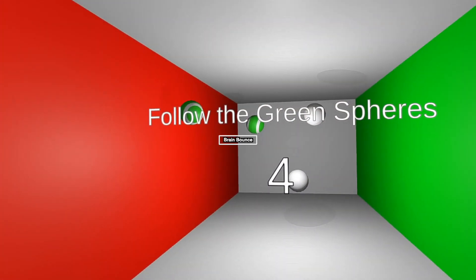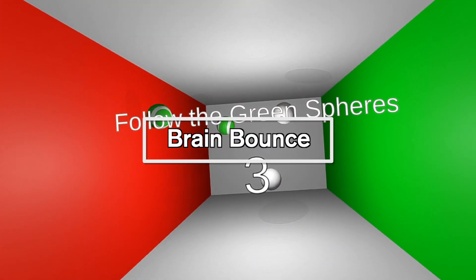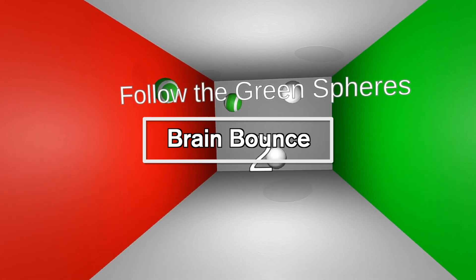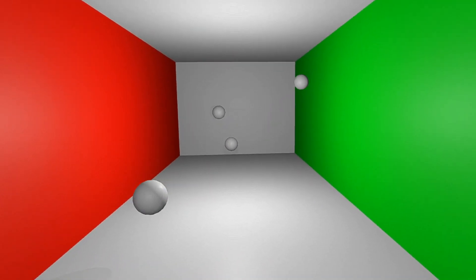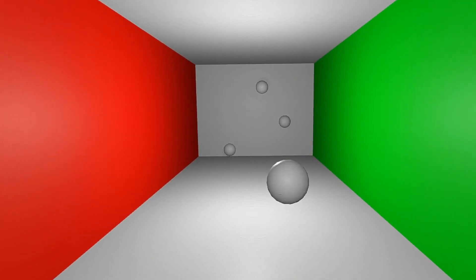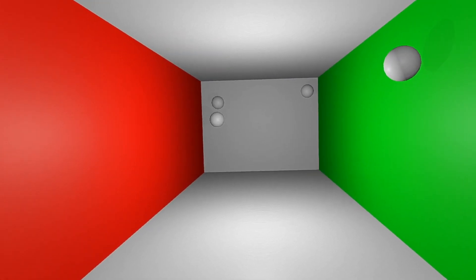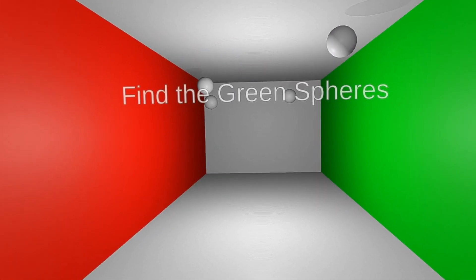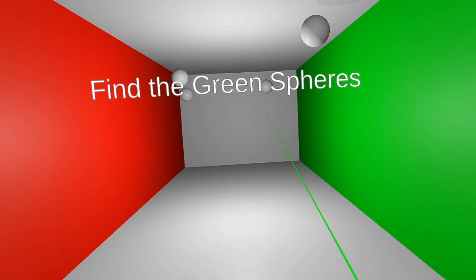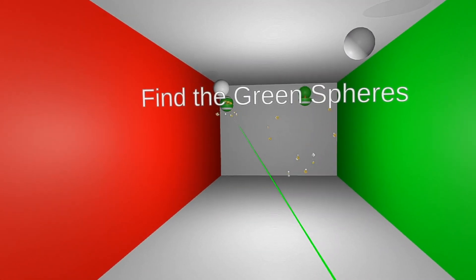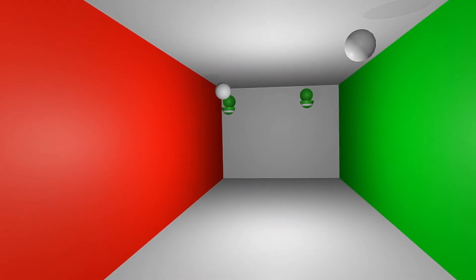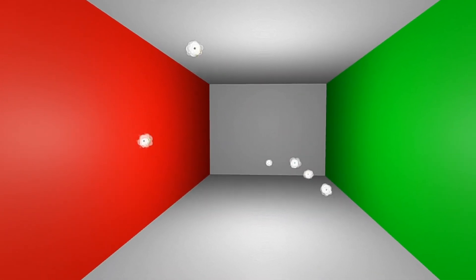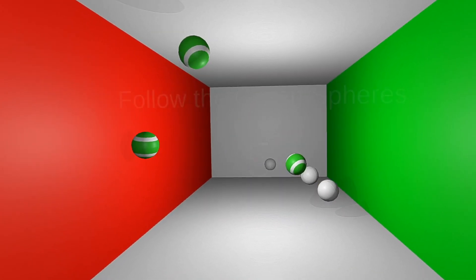The next activity is Brain Bounce. This is a multiple object tracking activity that uses your peripherals and soft focus. The objective is to follow the green spheres as they bounce around the room. When the objects stop moving, you need to identify the location of the green spheres.